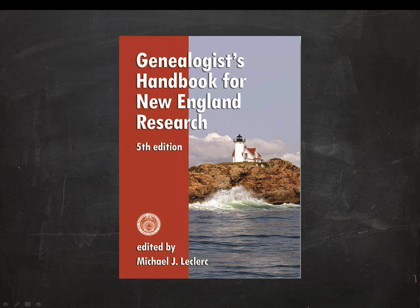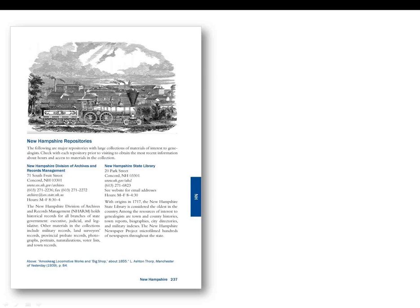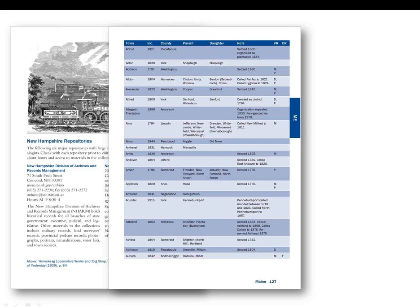The fifth edition of the Genealogist's Handbook for New England Research is a good resource to have in your personal genealogical library. It provides information on where to access vital records for each of the New England states from the 17th century until now. This new edition includes a chapter for each state with how-to information and contact information for the repositories holding a variety of records. In each state chapter, there are town tables listing every town in the state, along with its year of incorporation, county, parent and daughter towns, notes on previous names or earlier settlements, and information on vital and church records.